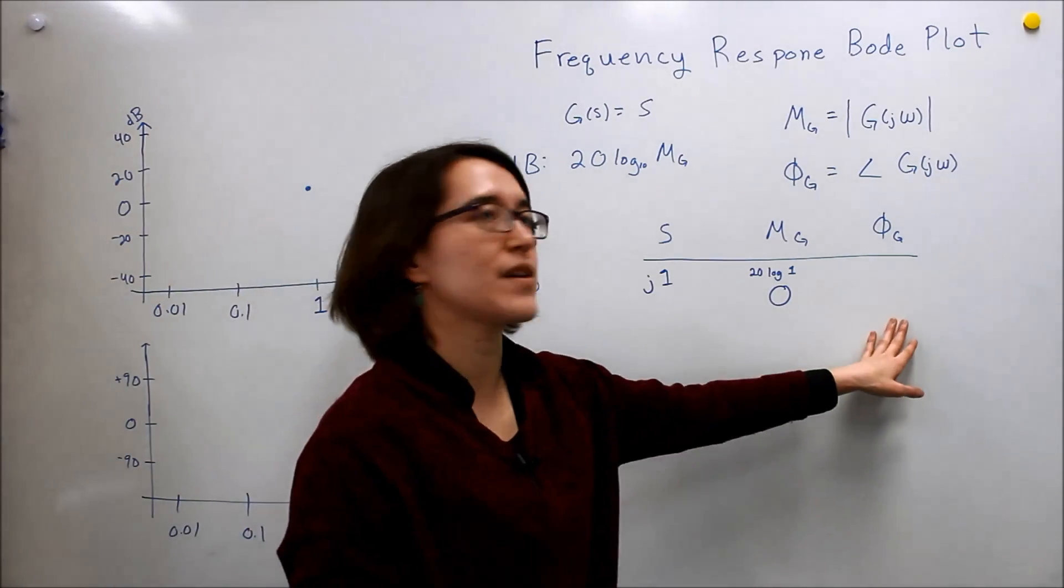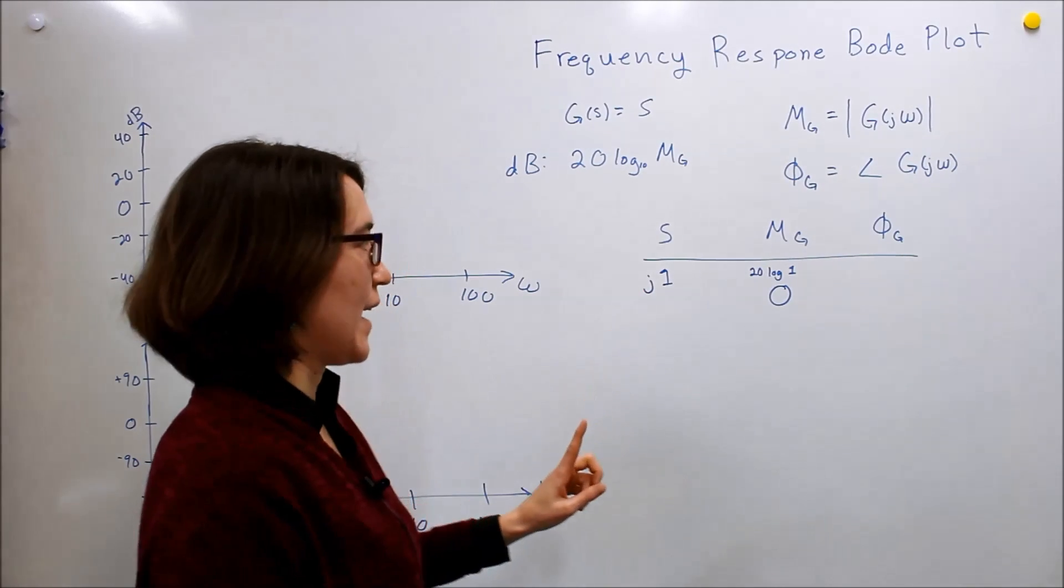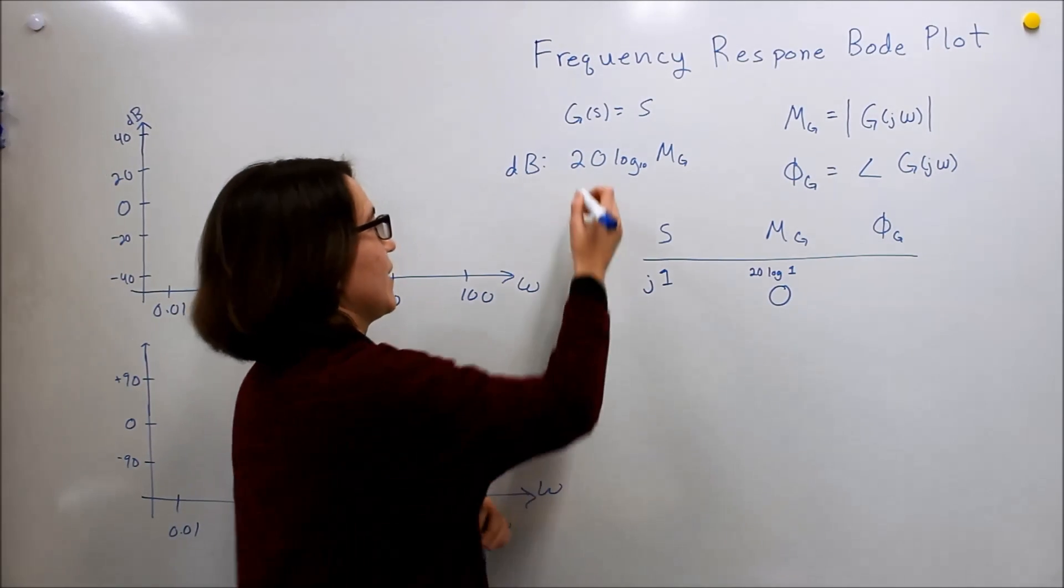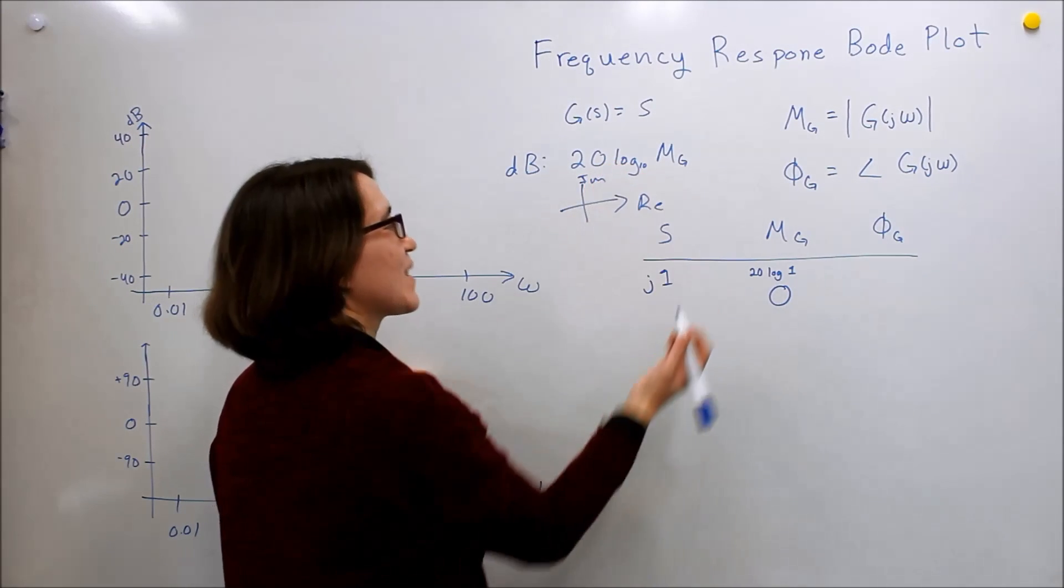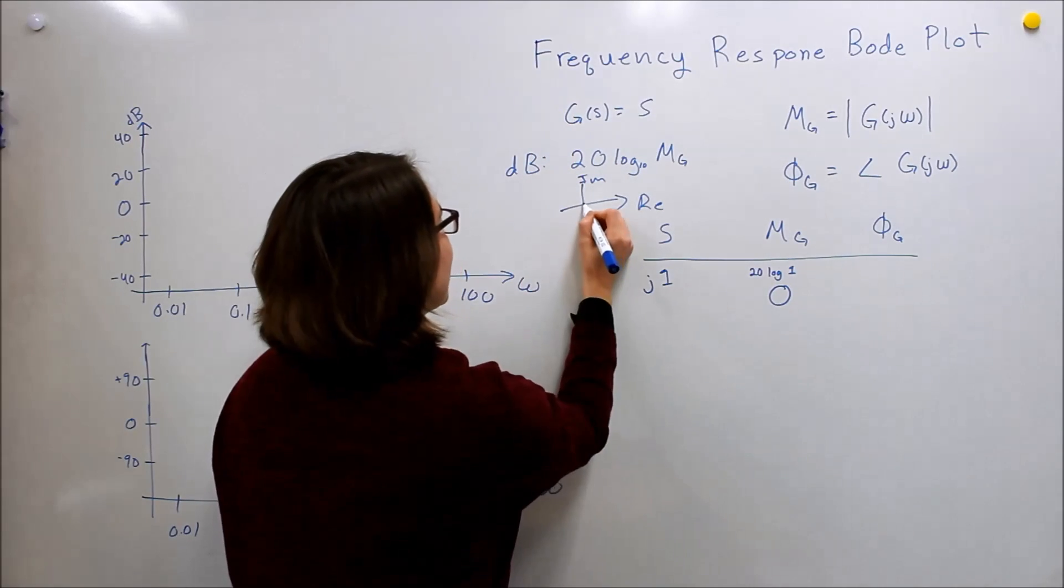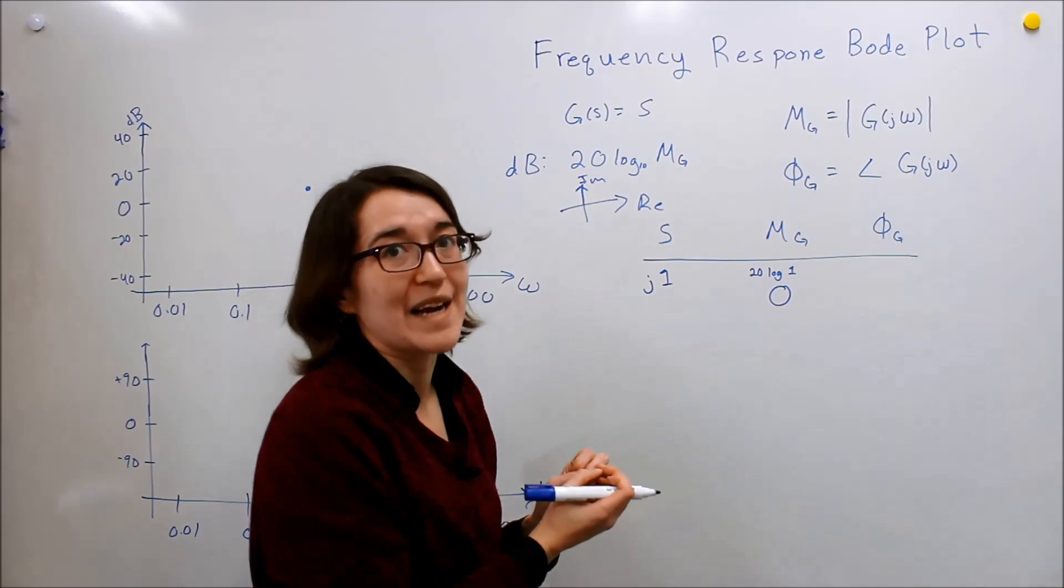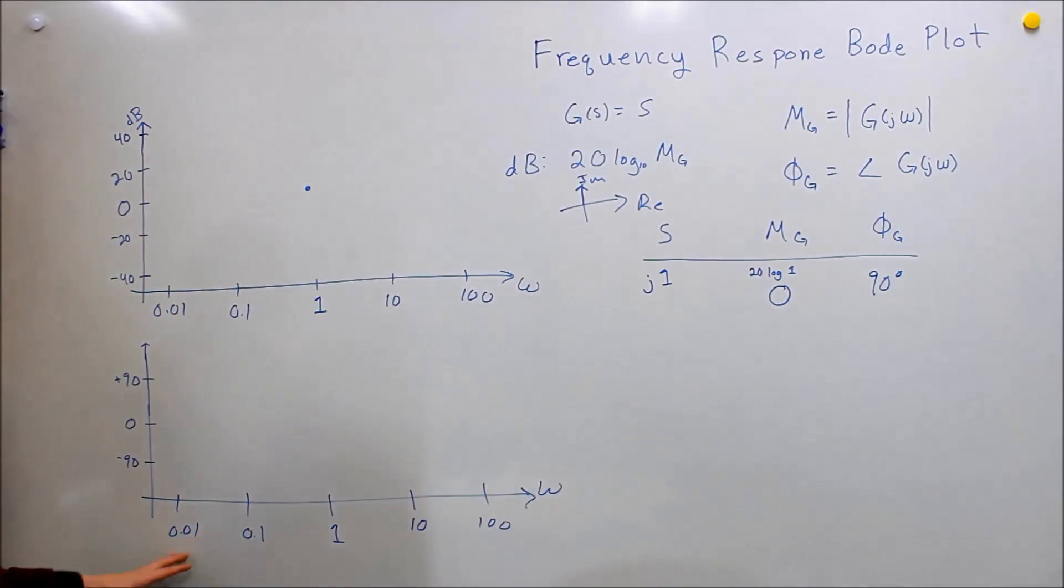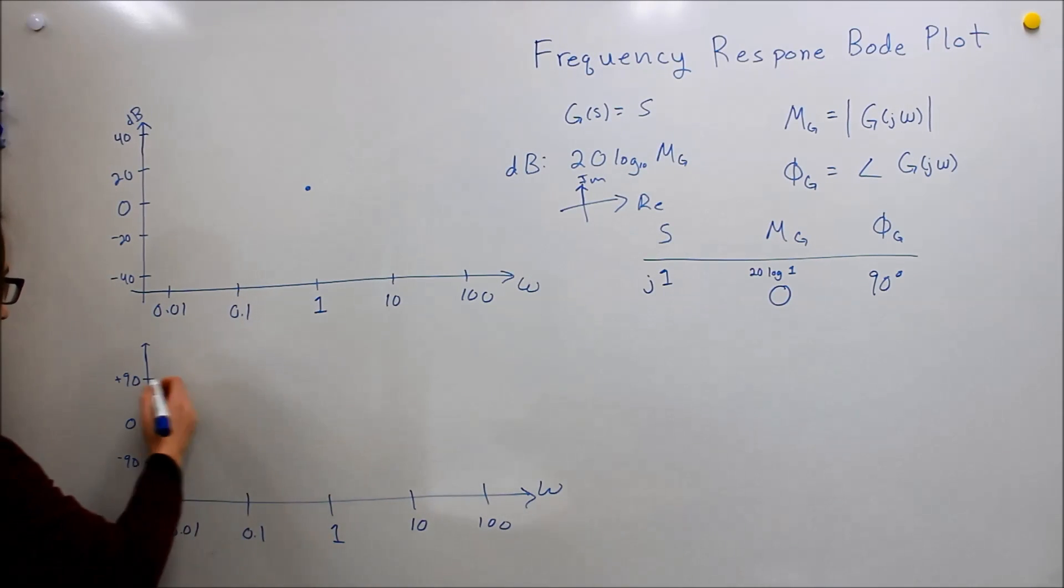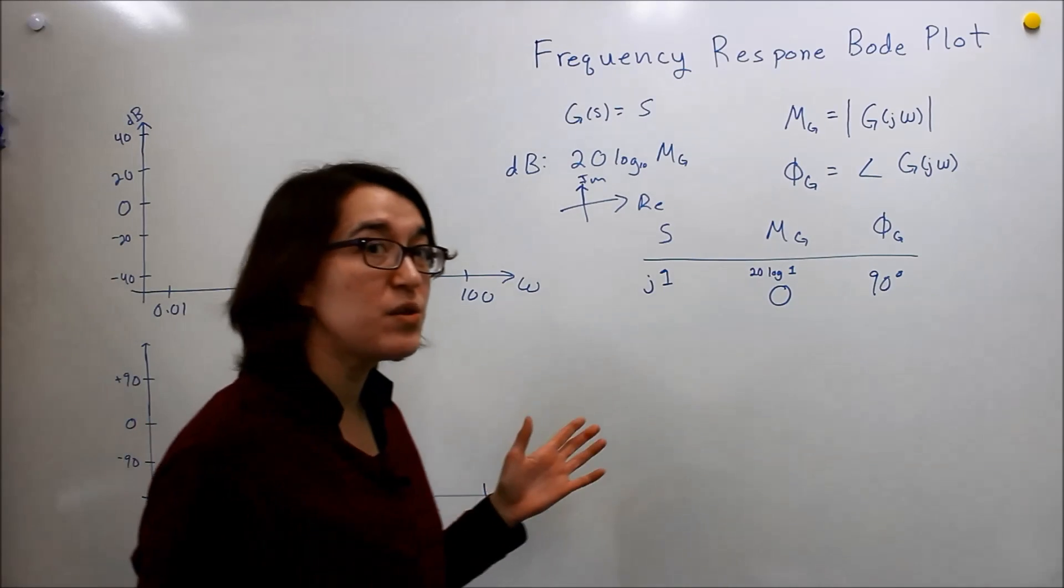Now let's take the phase of this. It's pretty easy - it's just j, so on our real and imaginary plot, it's pointing upward in the positive imaginary direction, so it's 90 degrees. We can plot that point at 90. We have one point, let's do a few more.